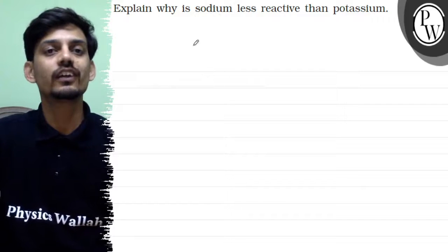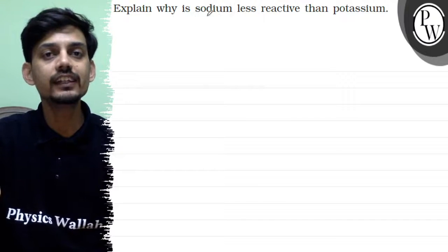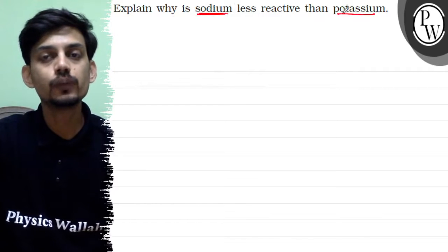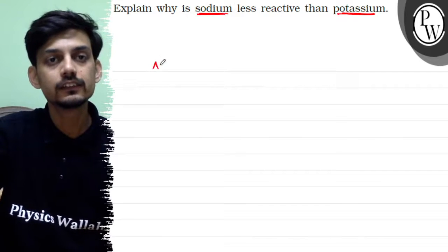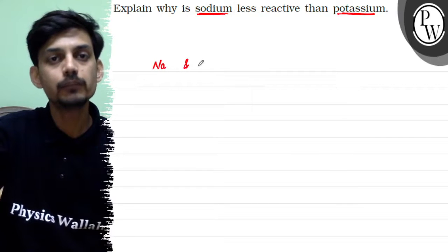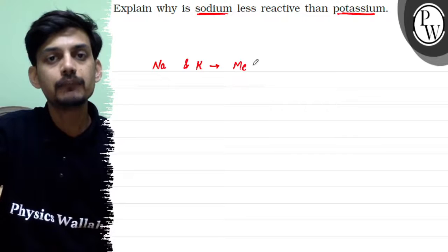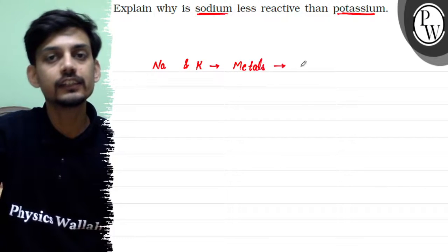Hello, the question says explain why is sodium less reactive than potassium. So sodium and potassium both are metals, and metals ke liya reactivity usually electron ke loss karne ki tendency ko dekh te hain.